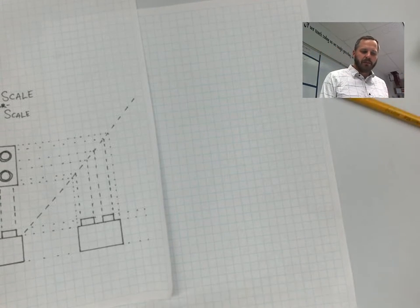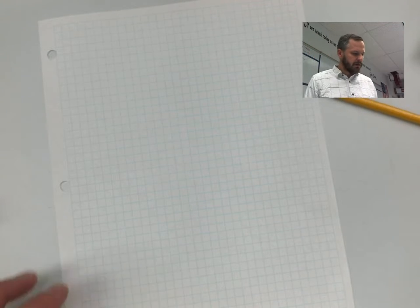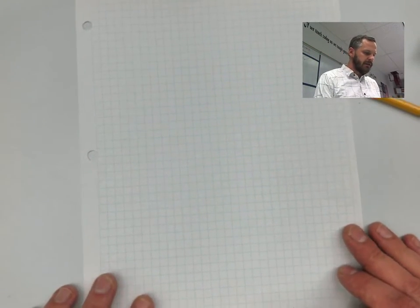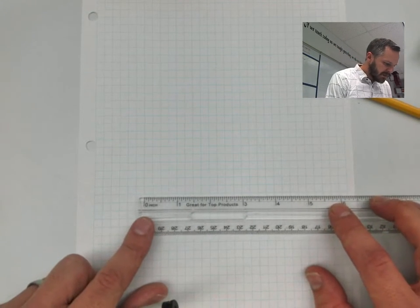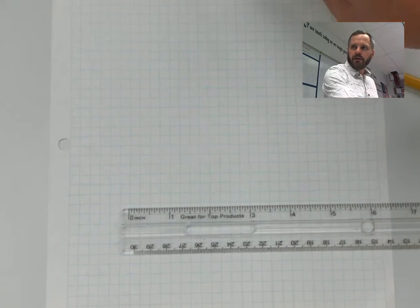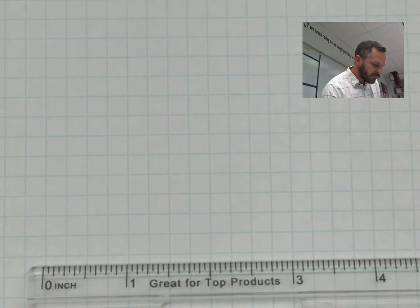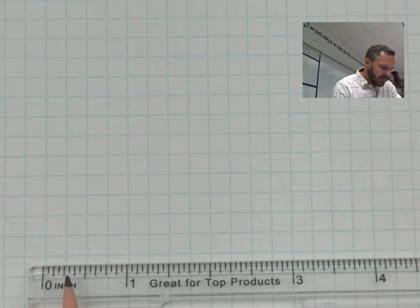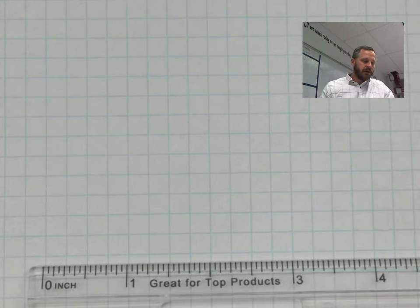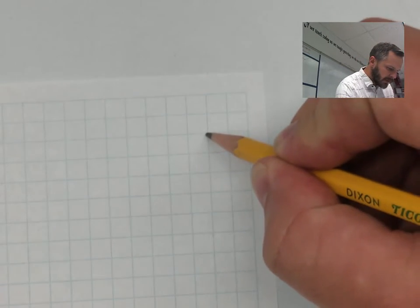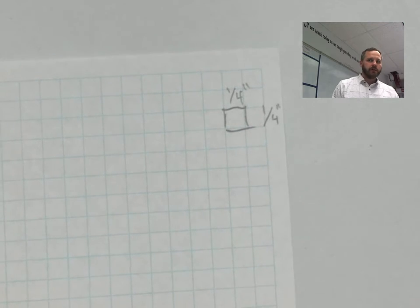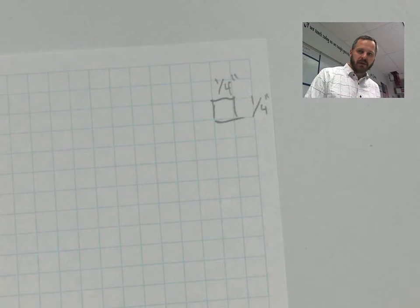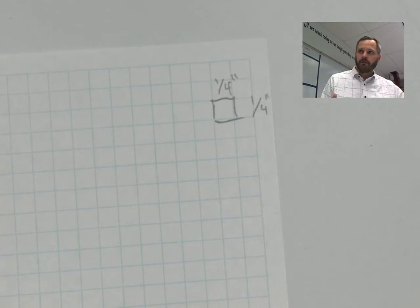Secondly, I'm going to be using a pen, but I highly suggest you use a pencil. I'm using a pen just so you can see it, but use a pencil — it's a good idea because if you make any mistakes, you can erase it a lot easier. Also, any time you have a straight line, use a ruler to draw all of your straight lines. If you do not use a ruler to draw your straight lines, it is wrong — I will take off points.